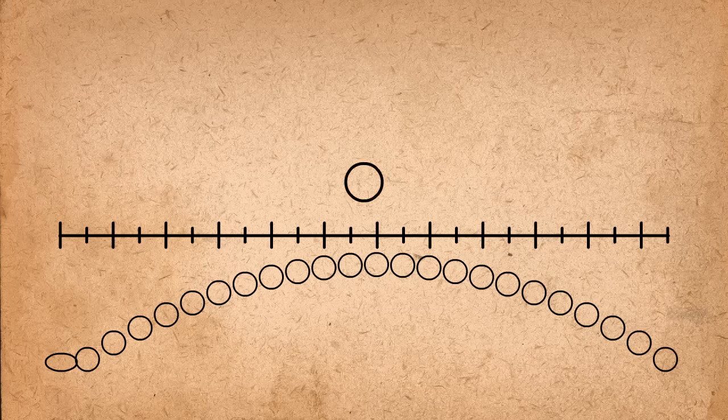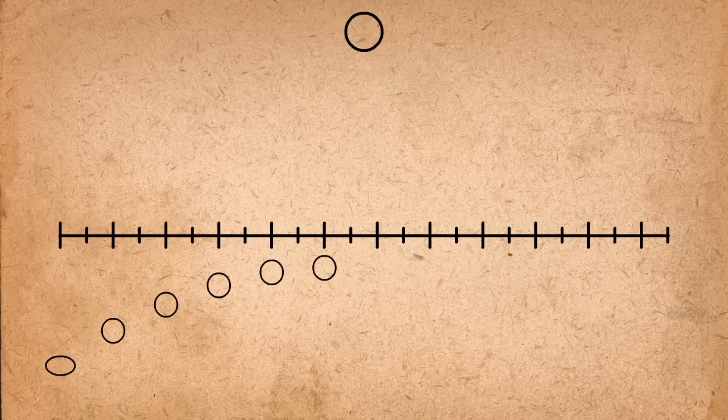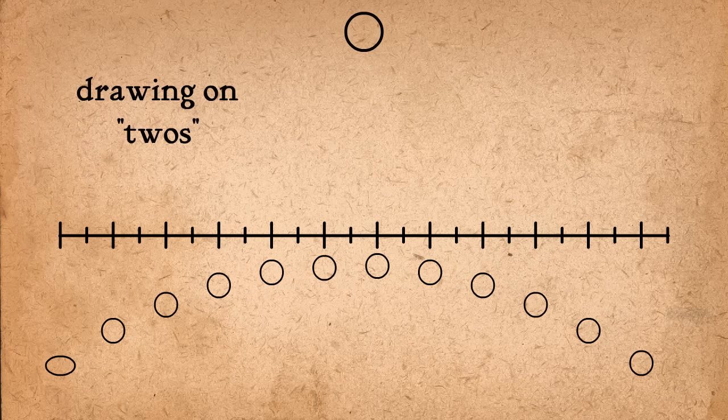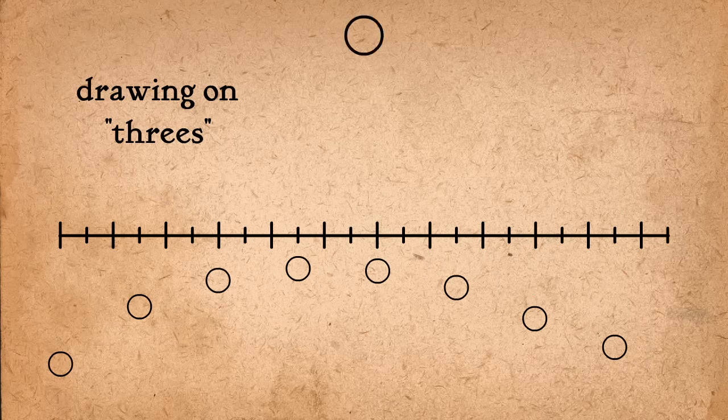If one drawing is made for each frame, 24 drawings per second, that is called drawing on ones. If one drawing is made for every two frames, that's called drawing on twos, and every three drawings is threes, and so on.